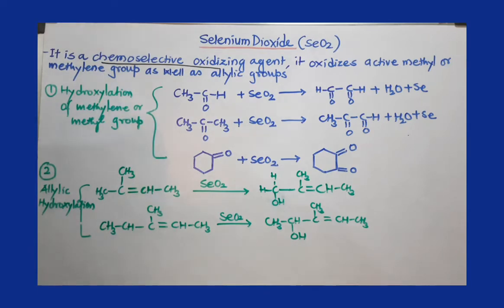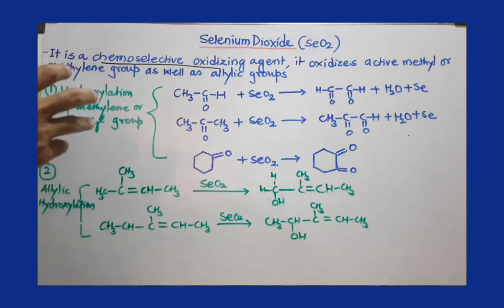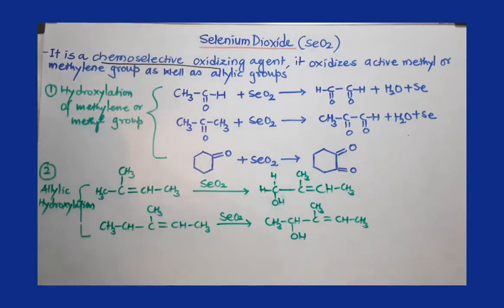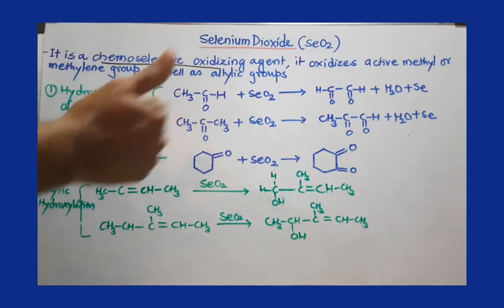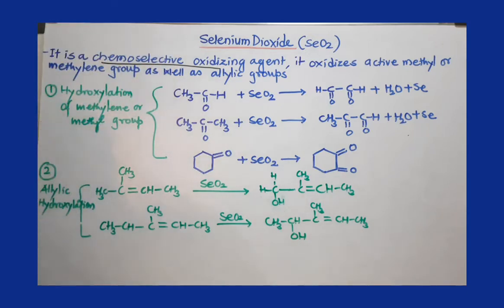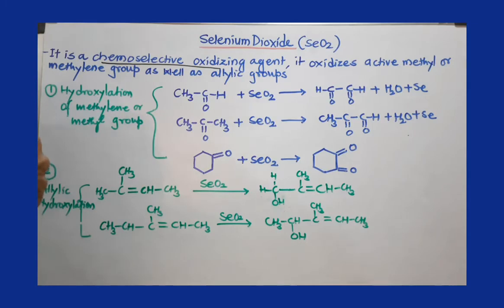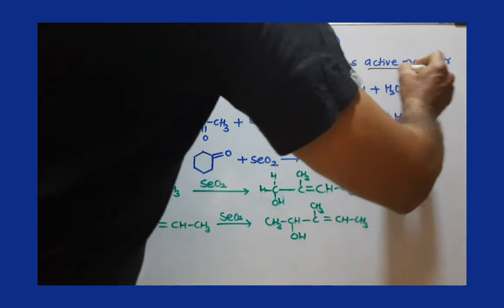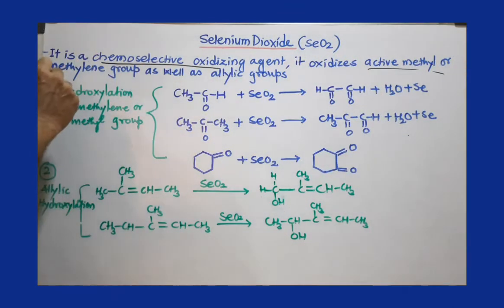If you use another oxidizing agent like KMnO4, that oxidizing agent is not chemoselective — it oxidizes the whole molecule and sometimes there is breaking of bonds. To avoid such uncontrolled oxidation reactions, we use selenium dioxide, which is why we call it a chemoselective oxidizing agent.